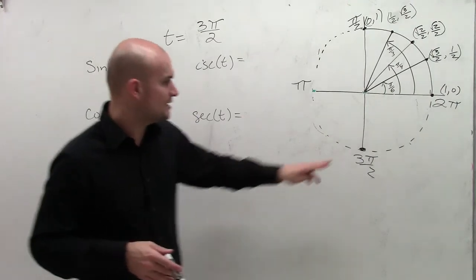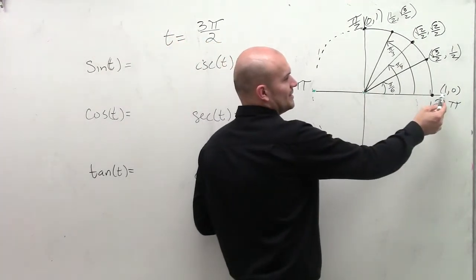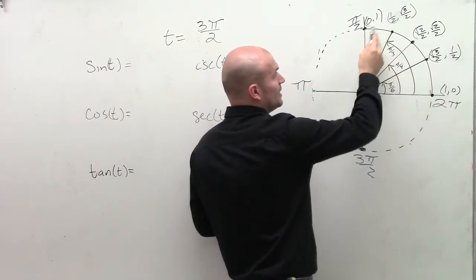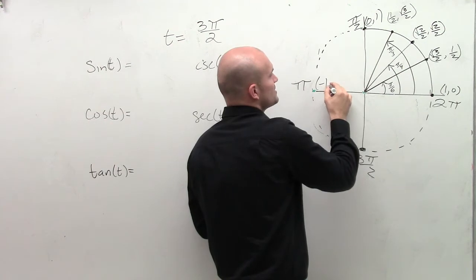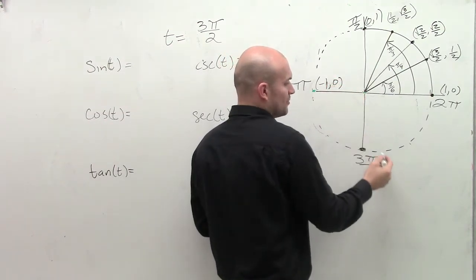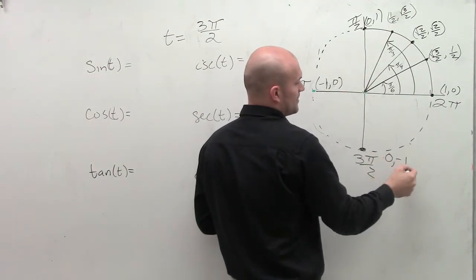Here's my point 3π/2. I need to determine the coordinate points. Since my radius is 1, we have (1,0) here and (0,1) here. So this point is (-1,0), and this point at 3π/2 is the exact reflection, which is (0,-1).